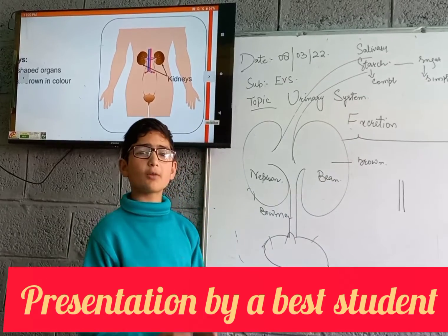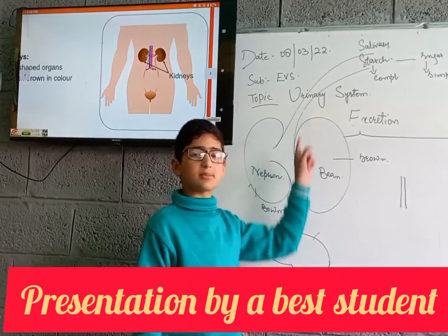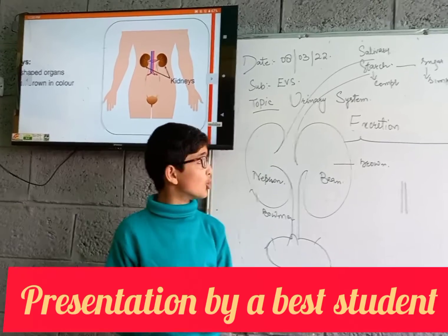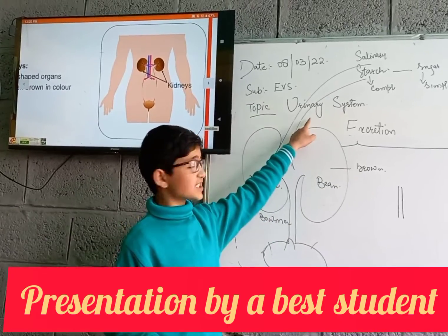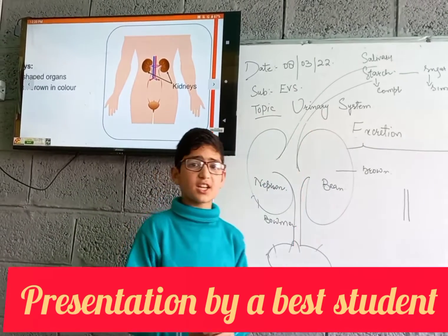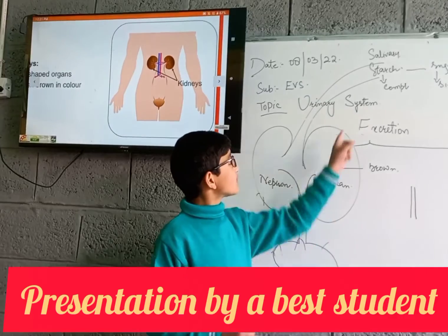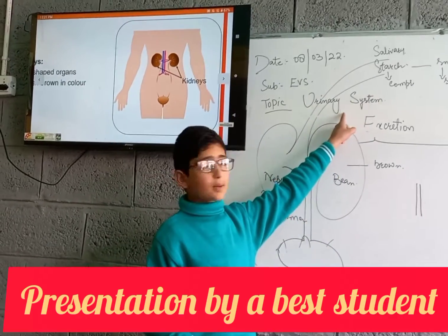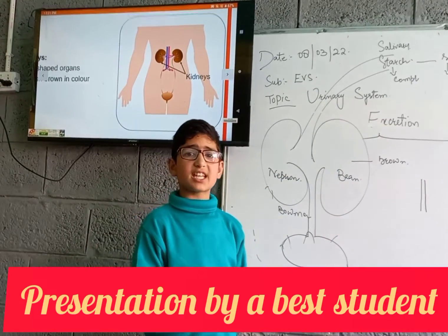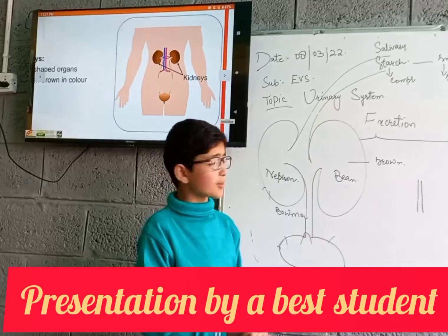So first of all, what is the urinary system? The urinary system is a type of organ system which helps us to throw the waste — the liquid waste, toxic waste — from our body. An example of toxic waste is urea, which is a chemical that is very harmful for our body.